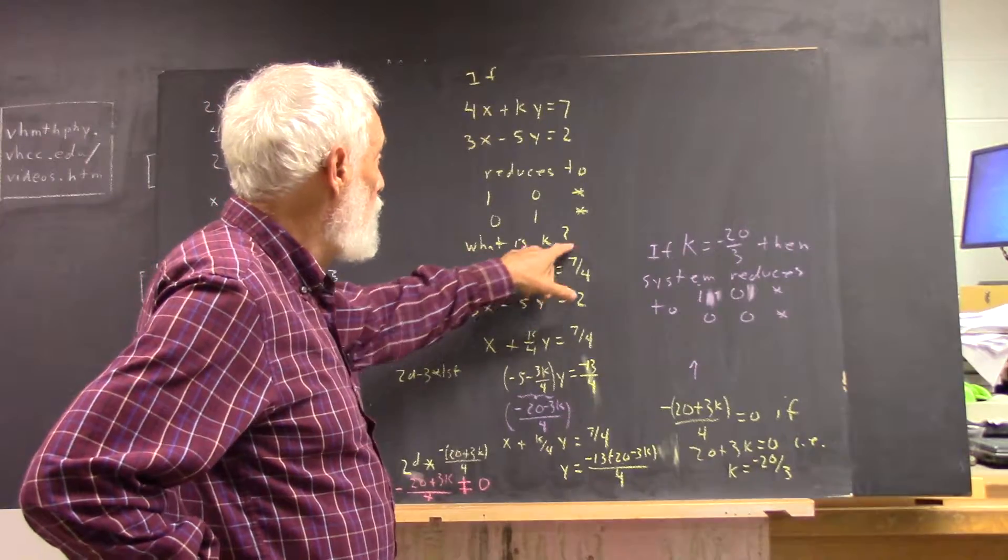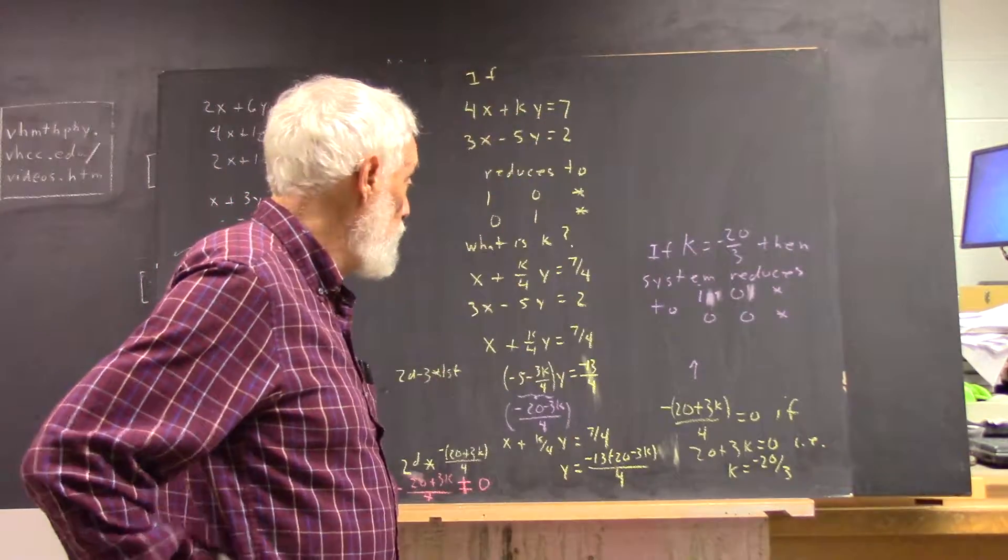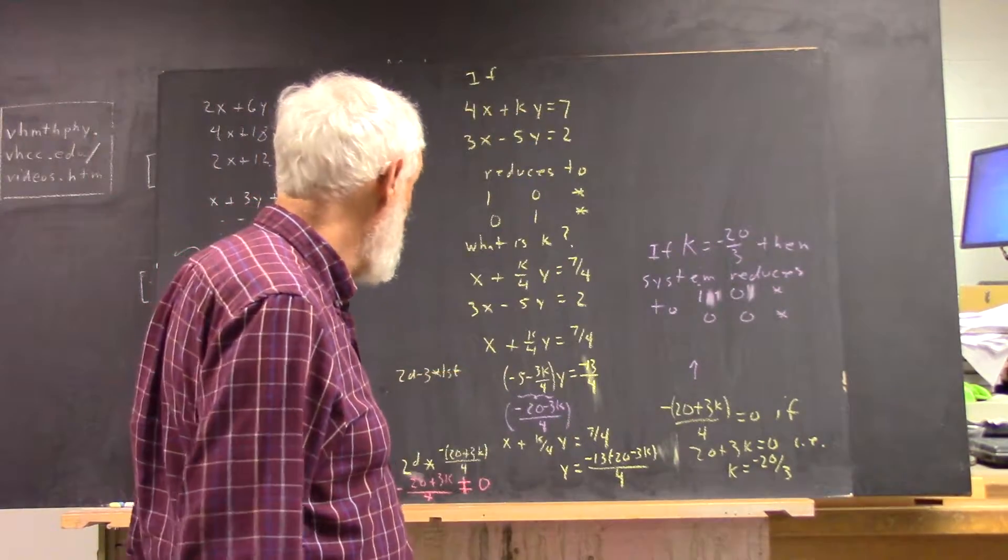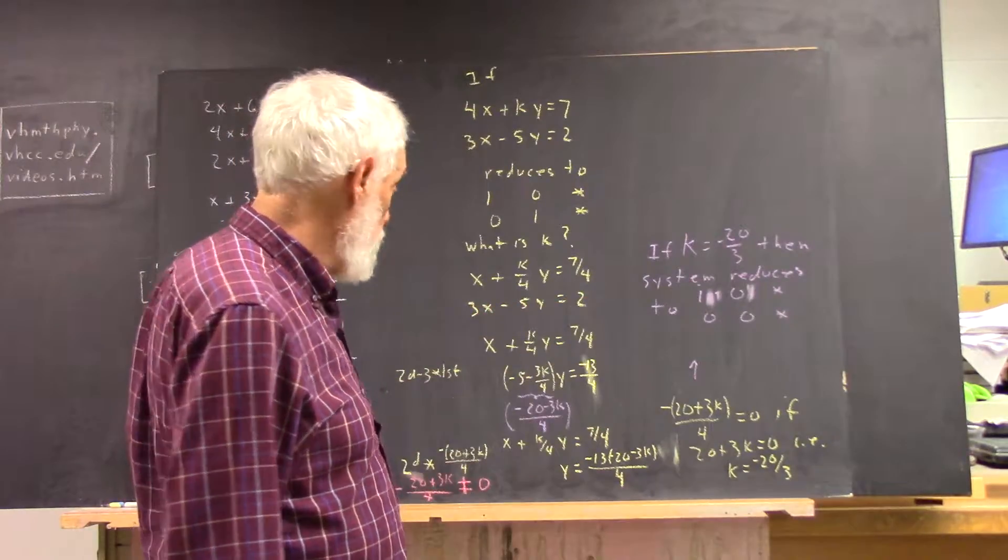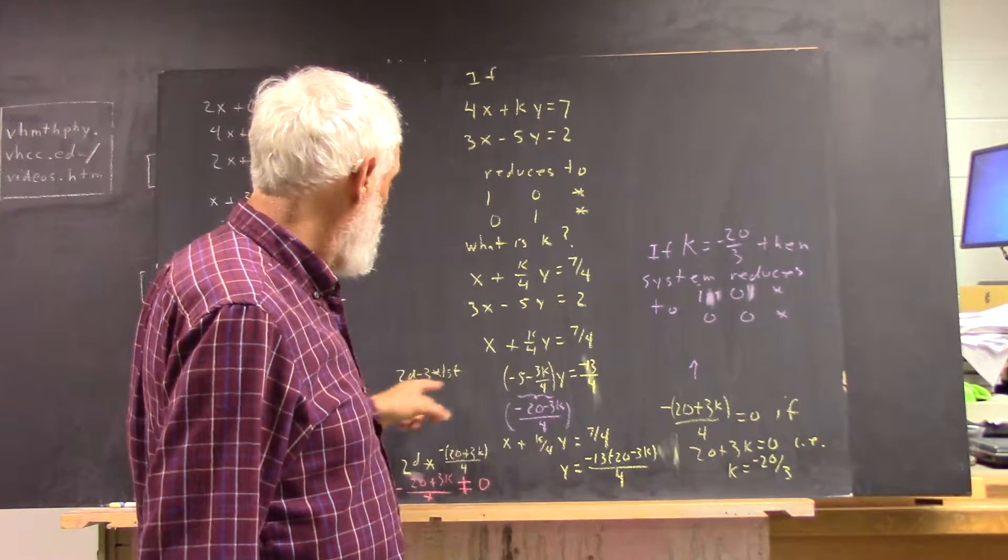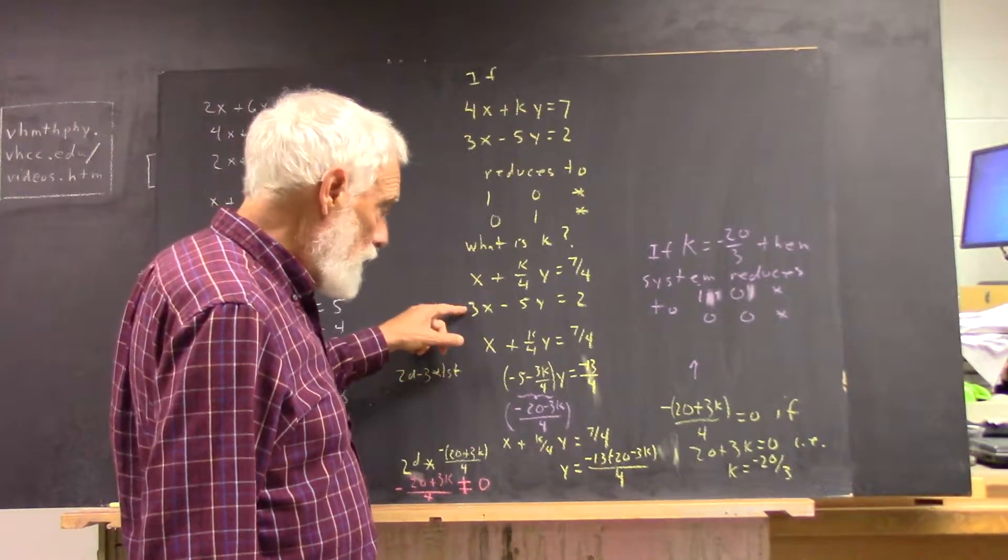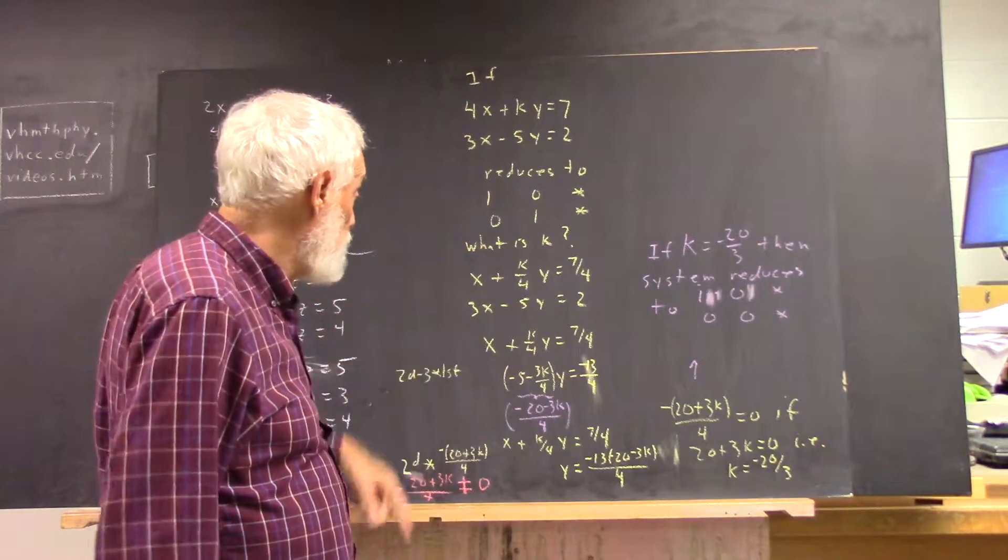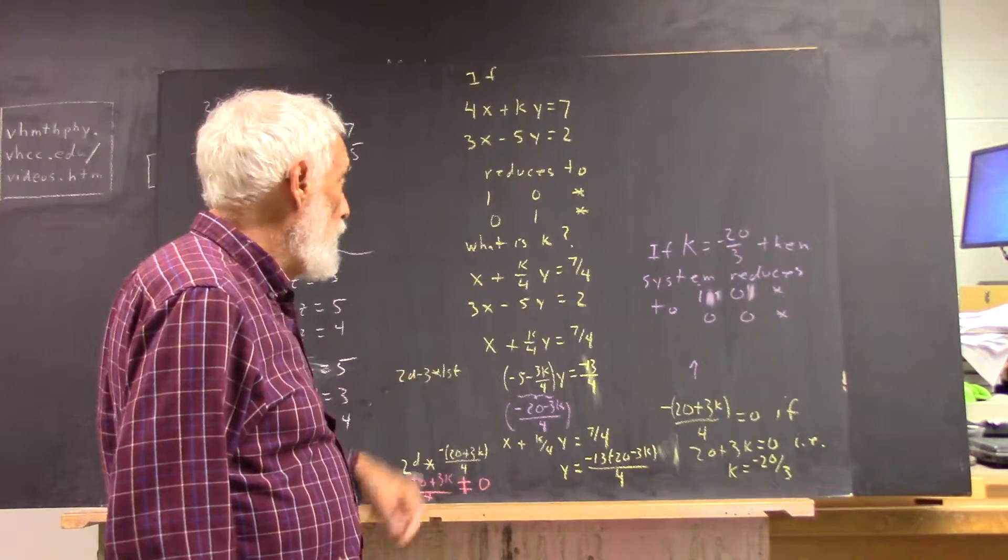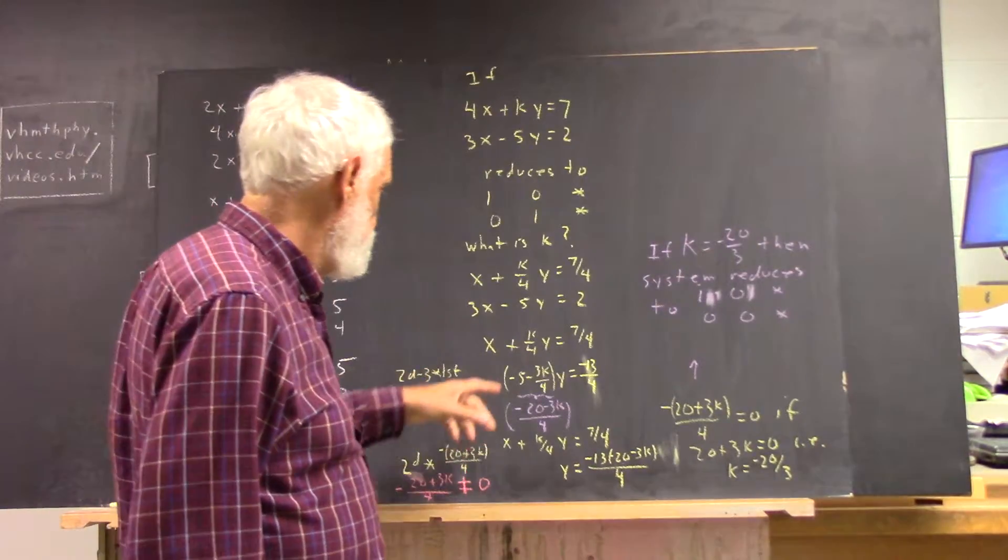So X plus K over 4Y equals 7 fourths, dividing the first equation by 4. That's perfectly legitimate. The second equation isn't yet changed, but now we're going to take the second equation, subtract 3 times the first, and that'll have the effect of eliminating X. So we do that, and we get this.